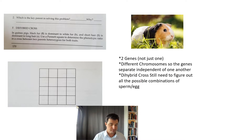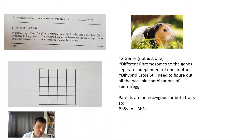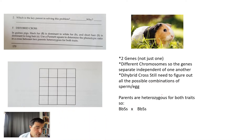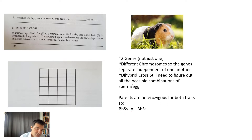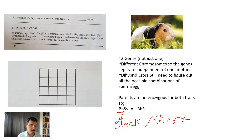The parents are both heterozygous for both traits — heterozygous for black and heterozygous for short hair. So phenotypically, if you were to look at them, these guinea pigs are going to be black and have short hair. We're going to cross them and see what kind of offspring they could give us.